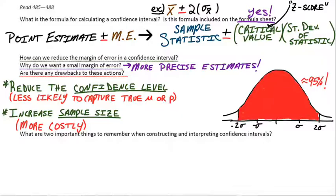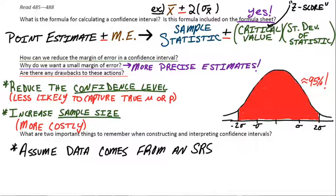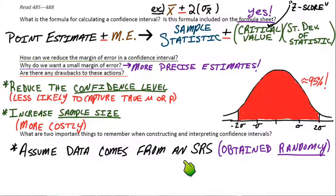Two important things to remember when you're making these things. The first one, we assume the data comes from an SRS. In other words, we trust that the data is obtained at random. And that's actually going to be one of the conditions we'll have to check when we build these confidence intervals, where the data actually obtained randomly.